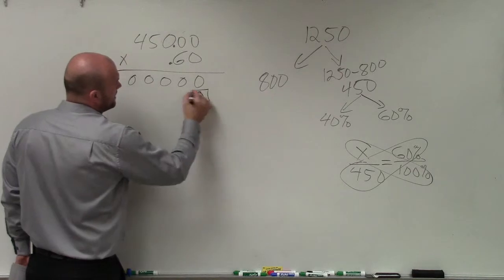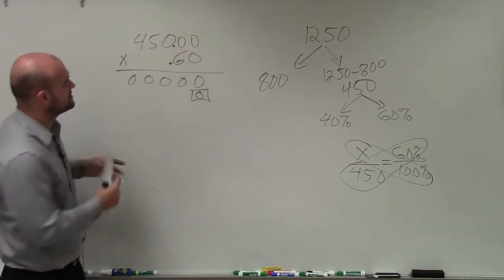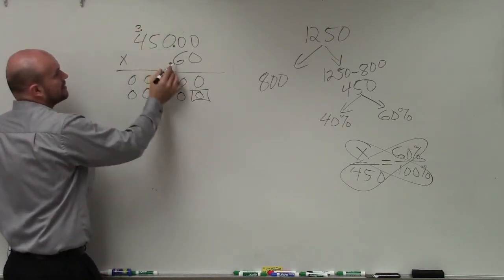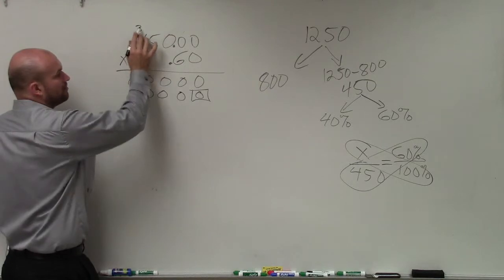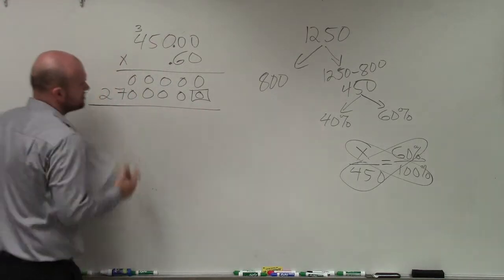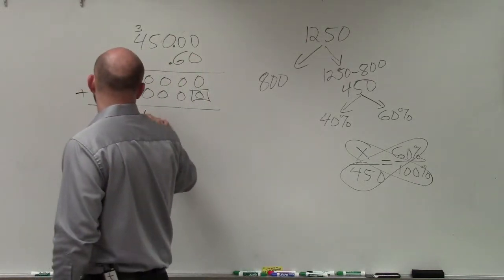Next thing is, I need to include my placeholder. Then I do 6 times 0, 6 times 0, 6 times 0. So that would be three zeros. 6 times 5 is 30. 6 times 4 is 24, plus 3 is 27. Add the two rows. When you add the two rows, obviously, this one is fairly simple. It's just a lot of zeros.